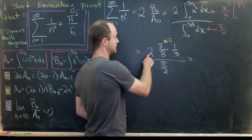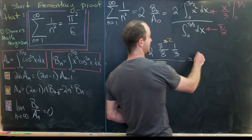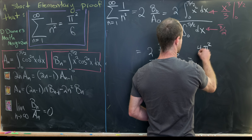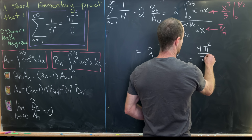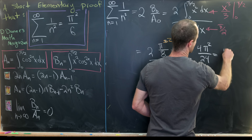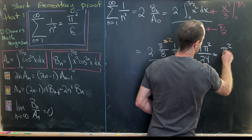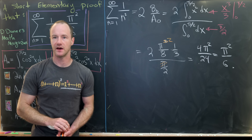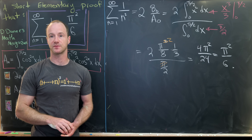In the end, we get 4π² over 24, which is exactly π²/6 — which is where we wanted to end up. And that's a good place to stop.